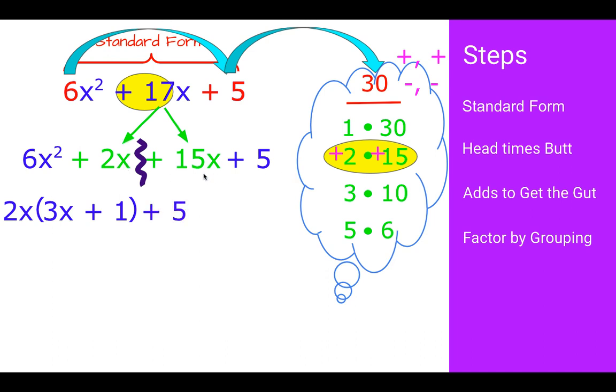Then, if I take out a 5, because 15x and 5 share a 5, I'm left over with 3x plus 1, because 5 times 3x is 15x, and 5 times 1 is 5. These both have a 3x plus 1, so I can pull that out, and I'm left over with that 2x plus 5.